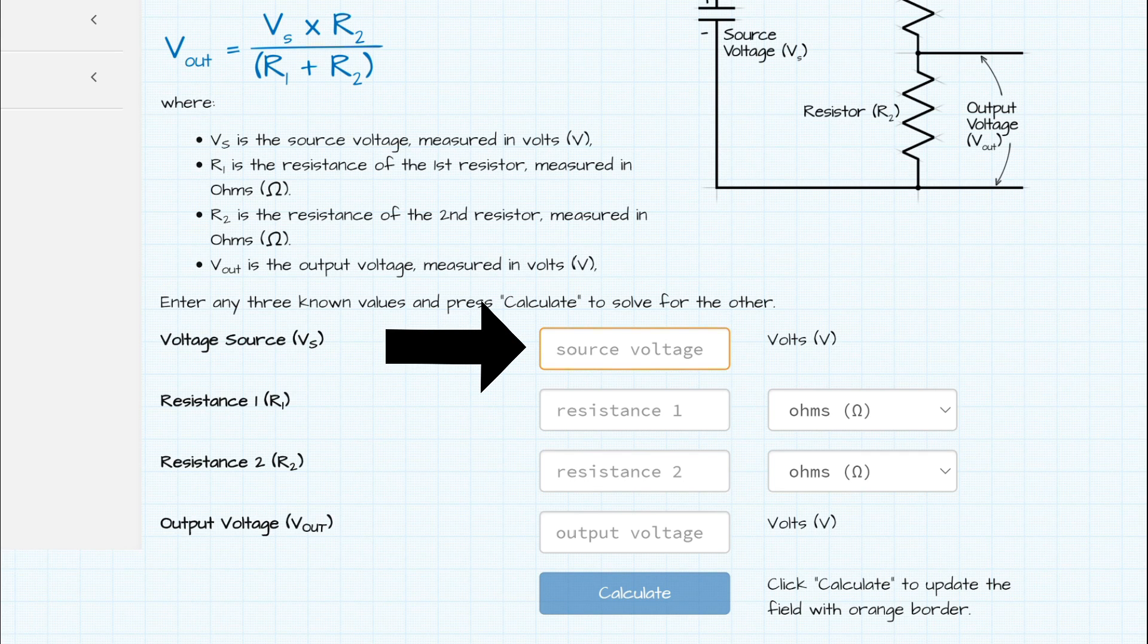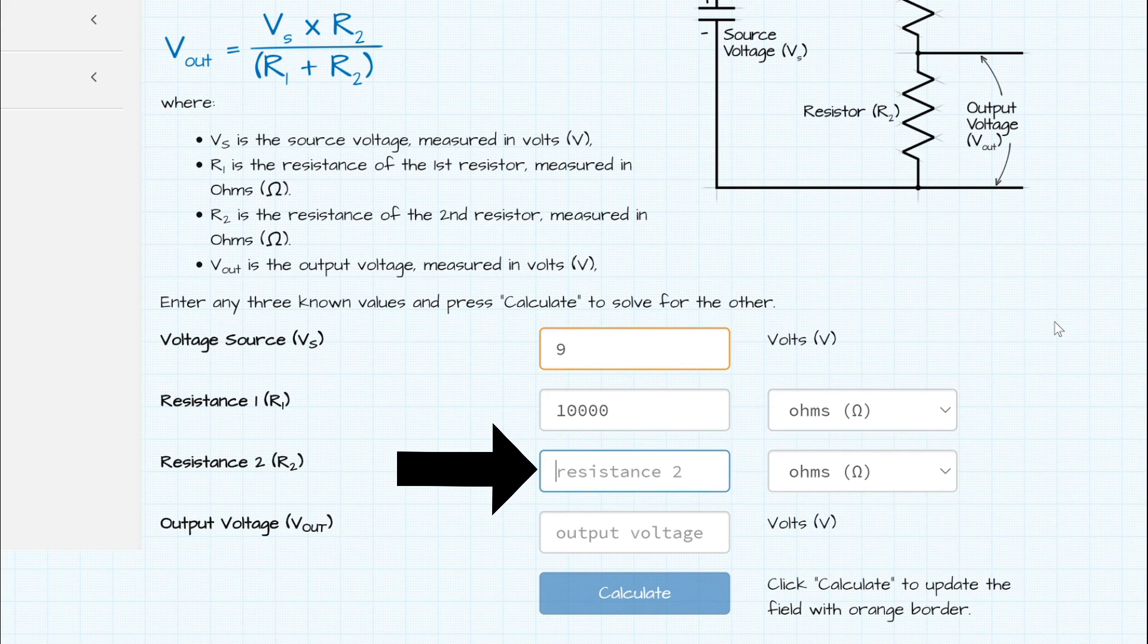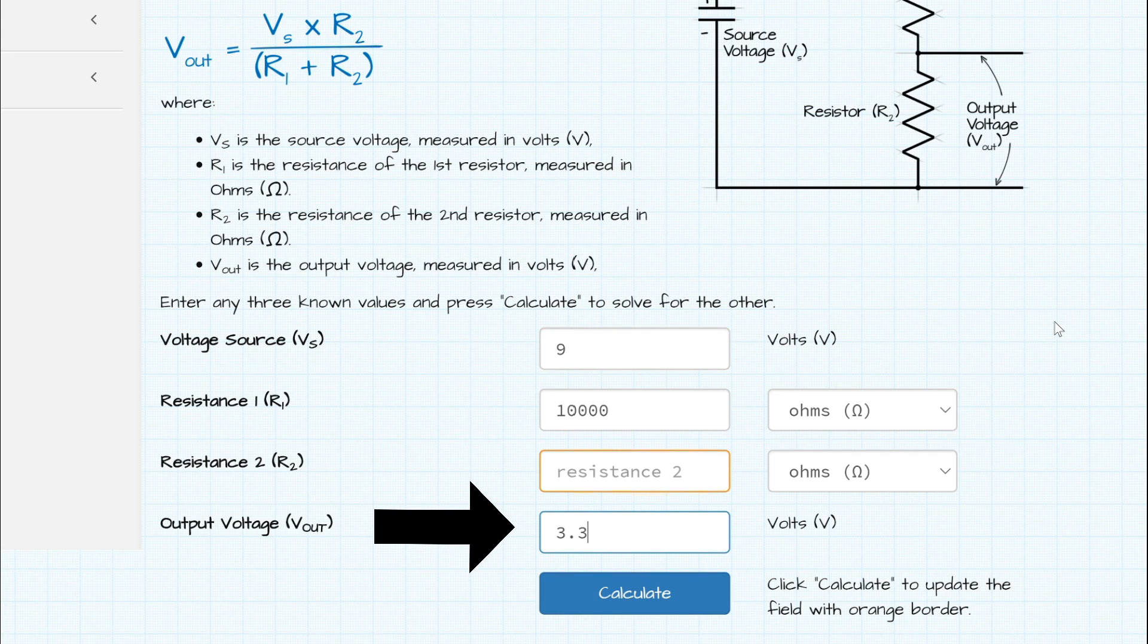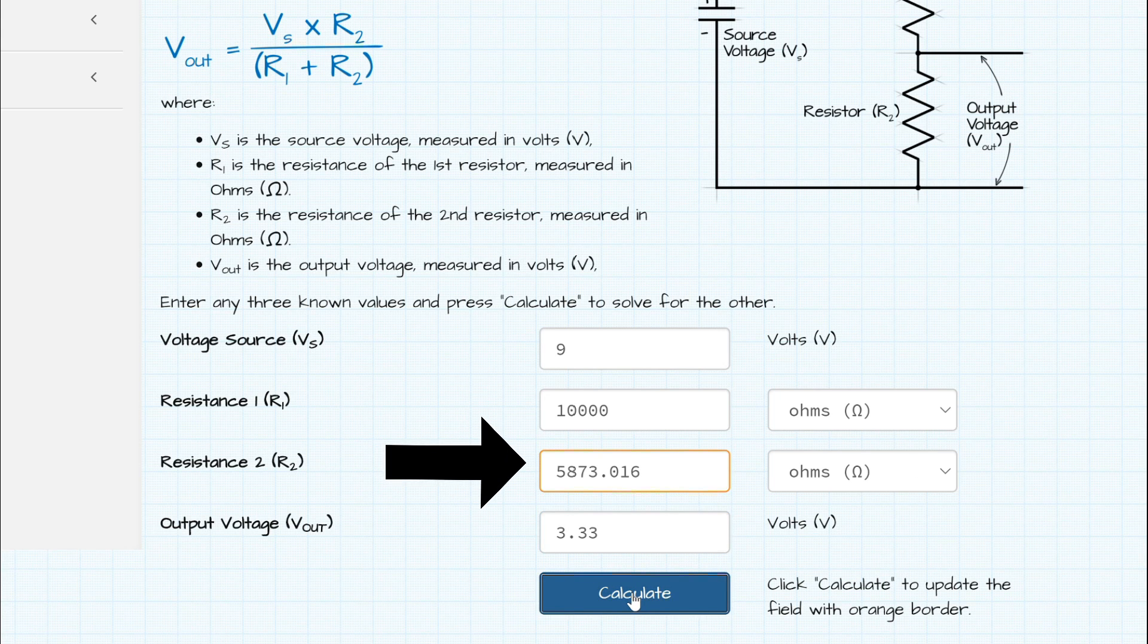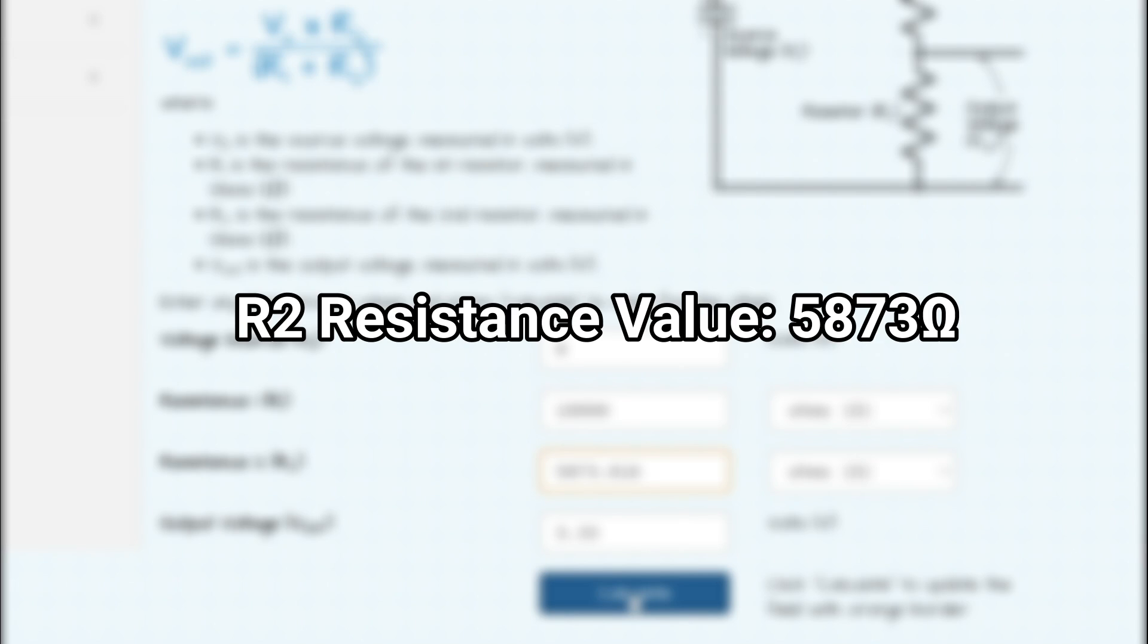In the voltage source box enter your desired voltage you want the relay to switch on at. In my case this is 9 volts. Next enter the resistance value of R1 which is 10,000 ohms. Leave the resistance 2 box empty and lastly enter the desired output voltage which for pin 6 of the timer is 3.33 volts. Press calculate and the calculator will now display the resistance value R2 needs to be. In my example that is 5873 ohms.